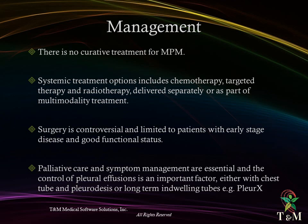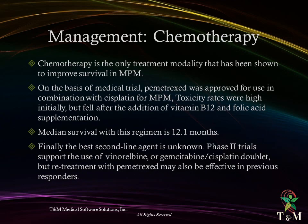Chemotherapy is the only treatment modality that has been shown to improve survival. On the basis of clinical trials, pemetrexed was approved for use in combination with cisplatin for malignant pleural mesothelioma. Median survival, however, is only 12 to 13 months, and the best second-line agent remains unknown.